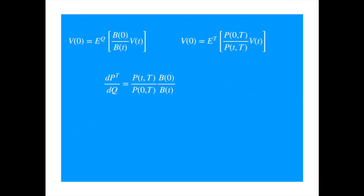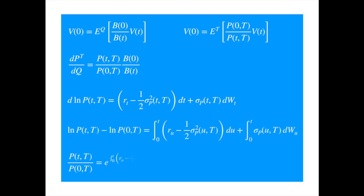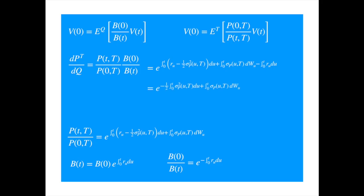Now we need to determine the ratio of the bank account and the ratio of the zero coupon. We were halfway through the derivation when we applied Ito's Lemma to the log of P, so let's reproduce those results. We can integrate and then exponentiate to get the ratio of the prices of the zero coupon at two different times. We know the value of the bank account from the previous video, and we can rearrange to get the ratio of B_0 and B_t. Substituting into the derivative, the integrals of R cancel and we are left with an expression that resembles the Radon-Nikodym derivative.